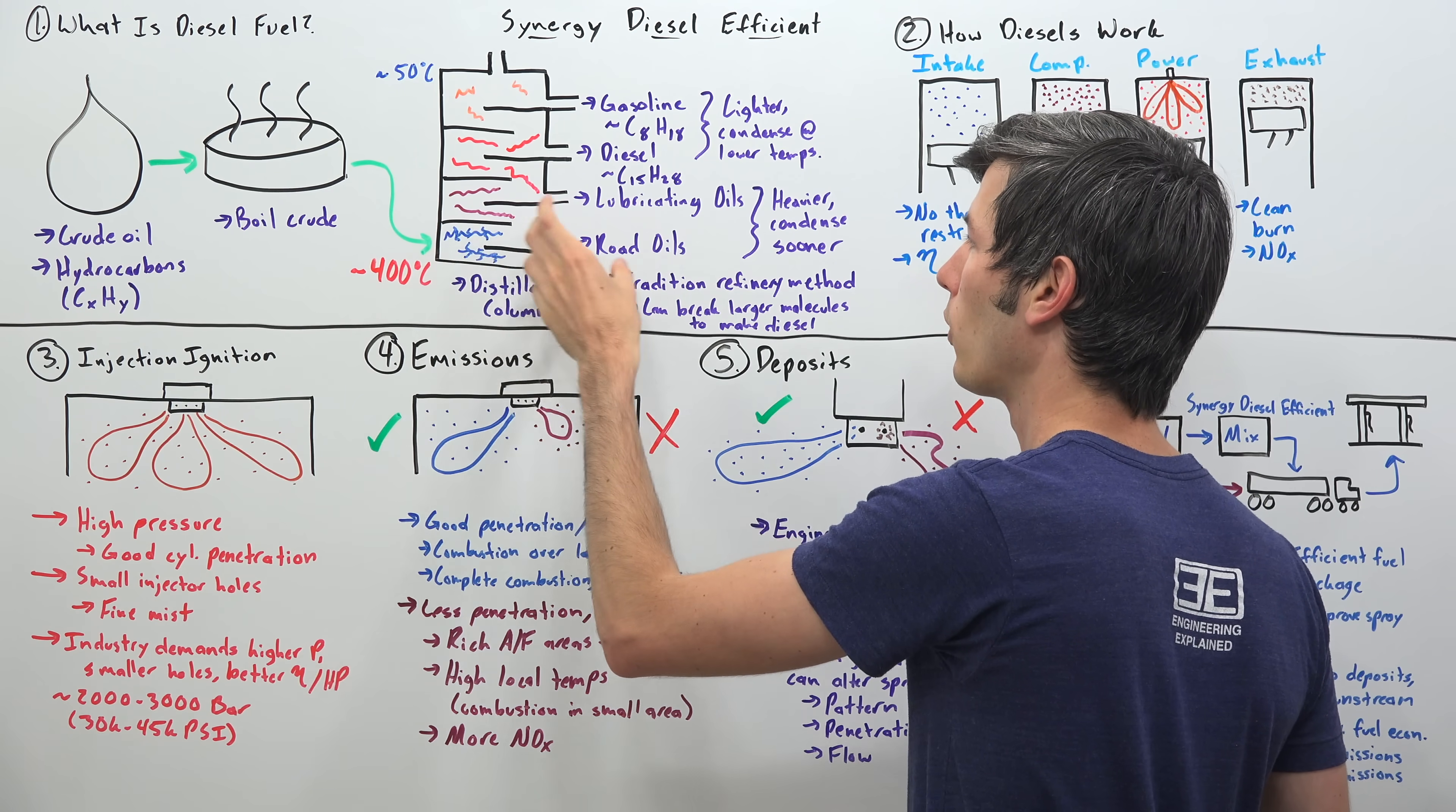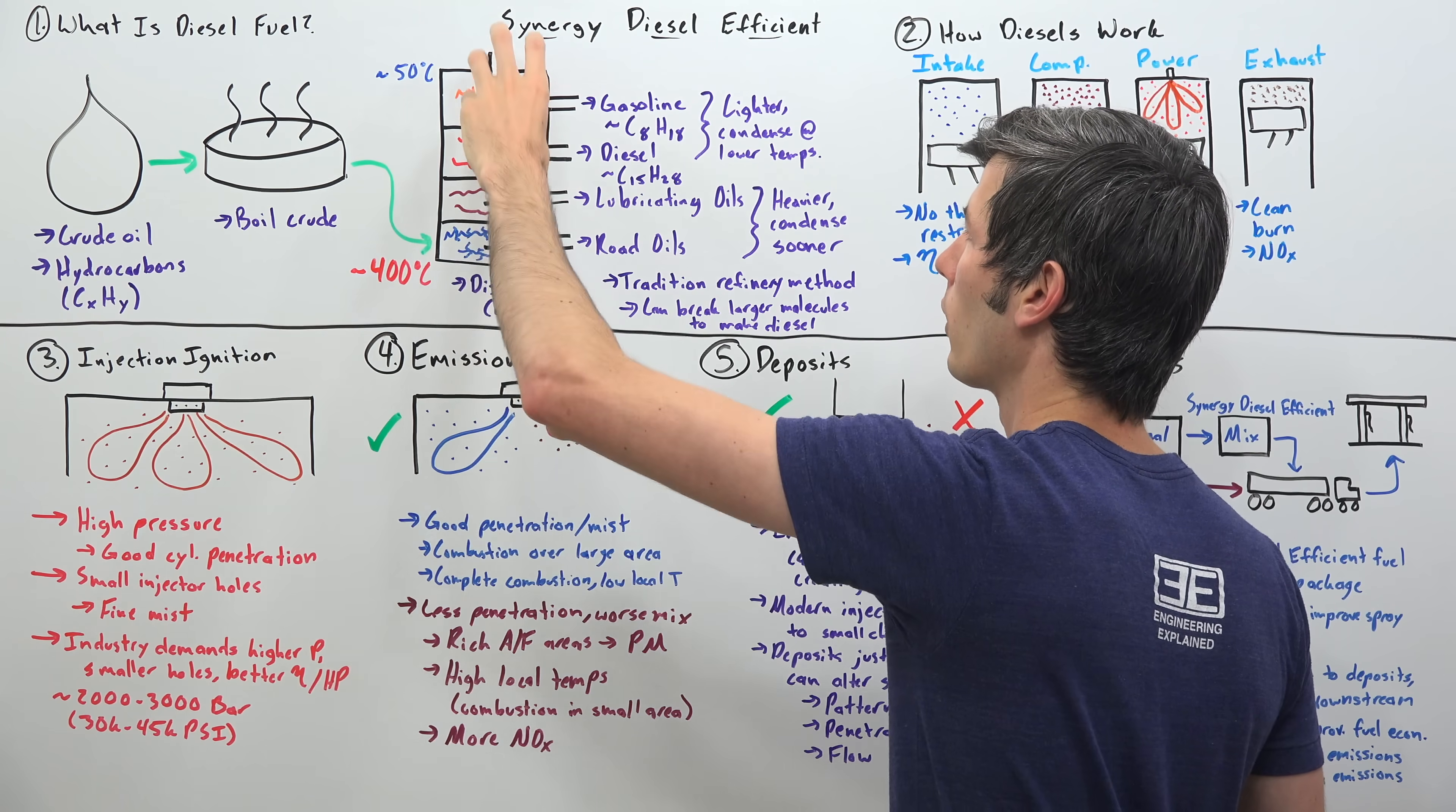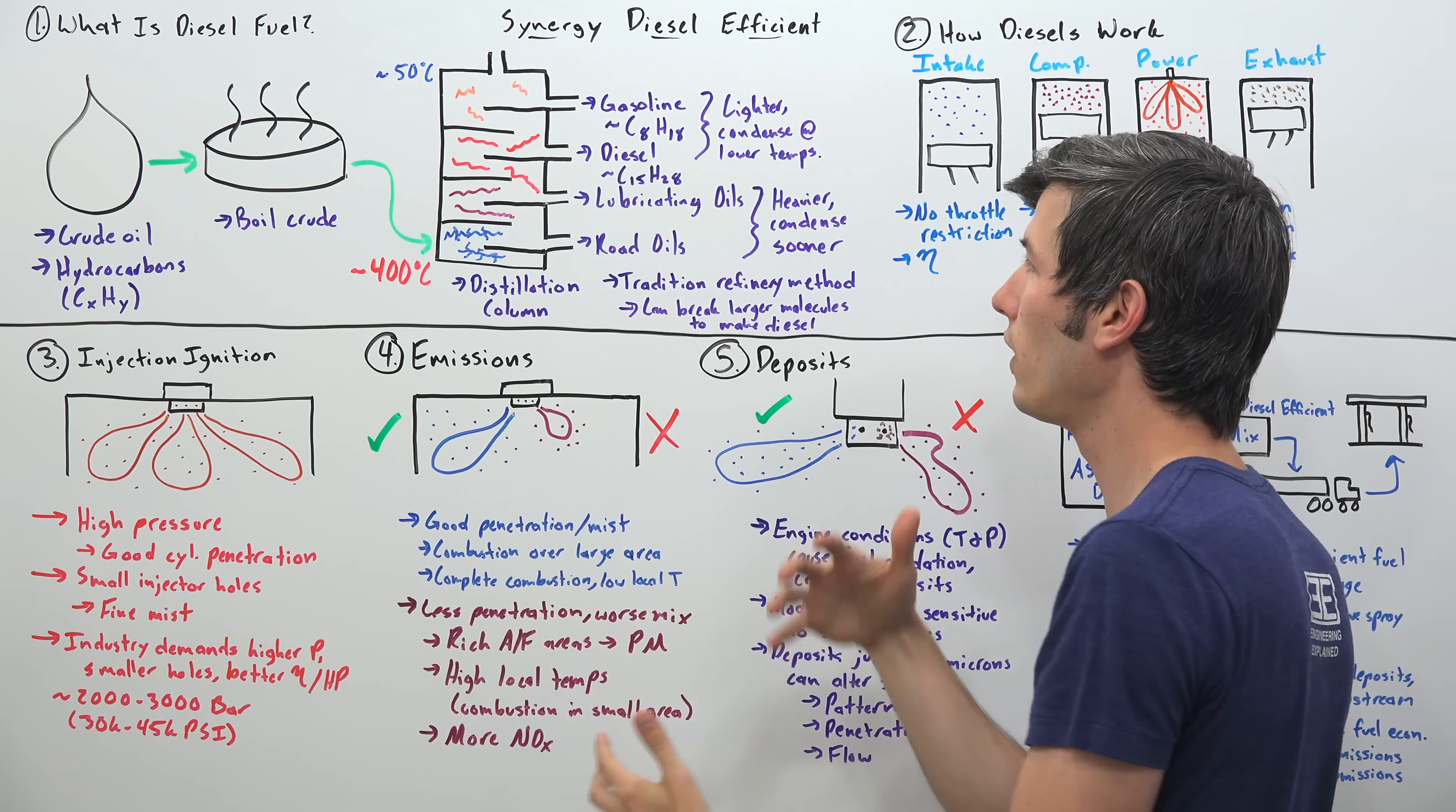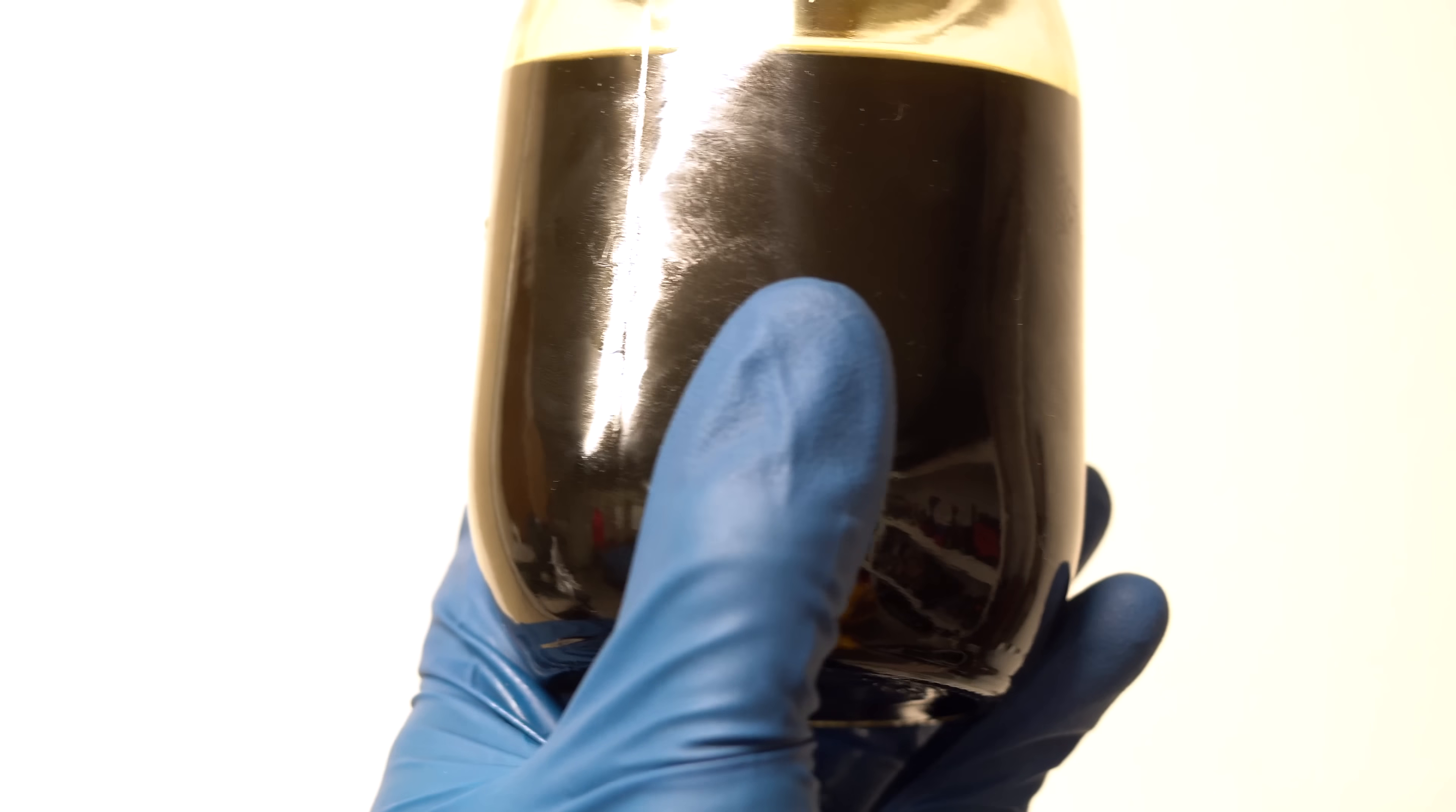Hydrocarbons of various sizes have various uses. So those larger ones that come right out at the bottom, those are going to be like a tar used for road oils. A little bit higher you get to lubricating oils, keep moving up into smaller molecules, you get diesel fuel. Keep going even further in this refinery process, further up this distillation column, and we get gasoline. So we're looking at hydrocarbons in the C8H18 range, 8 carbons, 18 hydrogens, versus diesel fuel somewhere in the range, give or take, of a C15H28.